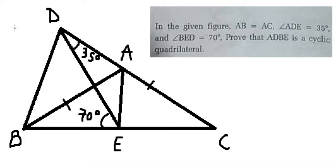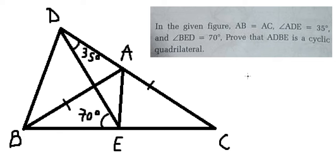Hello everybody. Today I will talk about geometry. The topic is about cyclic quadrilaterals. In the given figure, AB equals AC, angle ADE equals 35 degrees, and angle BED equals 70 degrees. We need to prove that ADBE is a cyclic quadrilateral.